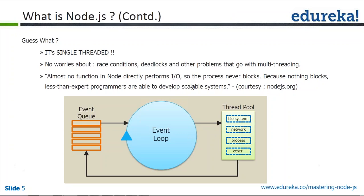Let's take an example of Apache. The way Apache works is every time there is a connection, Apache will fork a new process or start a new thread. So if you have 500 connections, it starts 500 threads, which instantly becomes a problem for the server. Whereas in Node.js, everything is event-driven and runs on a single thread. The main thread handles all the requests, so almost no function in Node directly performs I/O — the server never blocks. And because it never blocks, you can develop scalable systems.